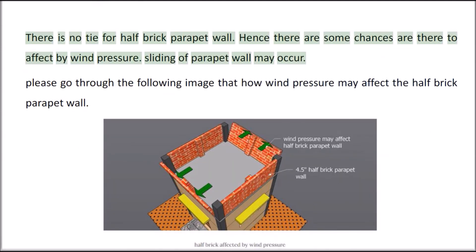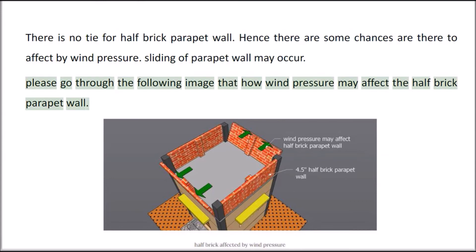There is no tie for a half brick parapet wall. Hence there are some chances that it will be affected by wind pressure. Sliding of the parapet wall may occur. Please go through the following image to understand how wind pressure may affect a half brick parapet wall.